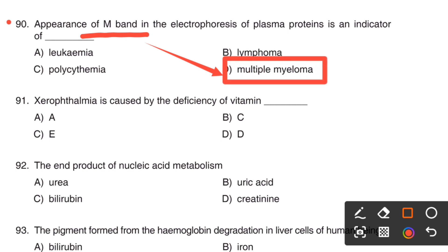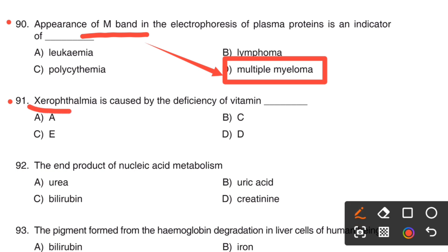You may study it as M4M. Next question. Xerophthalmia is caused by the deficiency of vitamin dash. Option A, Vitamin A. Option B, Vitamin C. Option C, Vitamin E. Option D, Vitamin D. Xerophthalmia is a condition related to the eye, and vitamin A deficiency is associated with ophthalmic disorders.